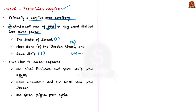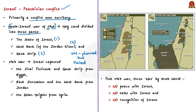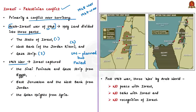The United Nations had an early plan to give part of the land to each group, but it failed. Israel and the surrounding Arab countries fought several wars over the territory. Today's lines largely reflect the outcomes of two very important wars — one waged in 1948 and another in 1967. In the 1967 war, Israel captured the Sinai Peninsula and Gaza Strip from Egypt, East Jerusalem and the West Bank from Jordan, and the Golan Heights from Syria.